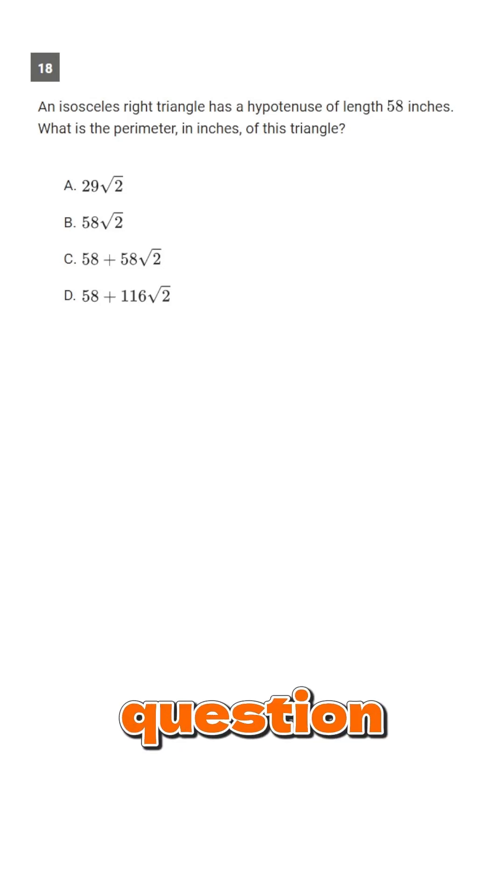So let's take a look at this question. We're given that an isosceles right triangle has a hypotenuse of 58 inches and we're asked what is the perimeter in inches of this triangle.